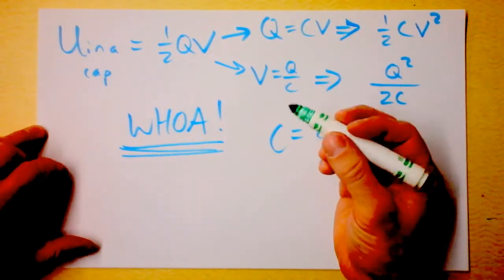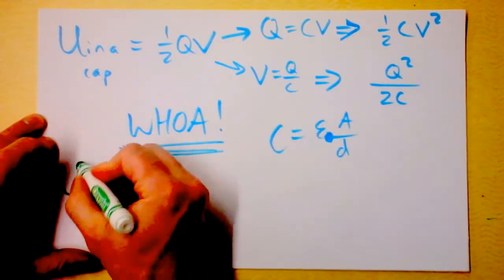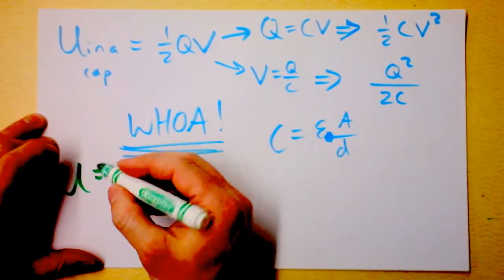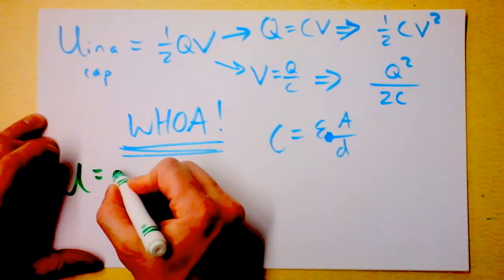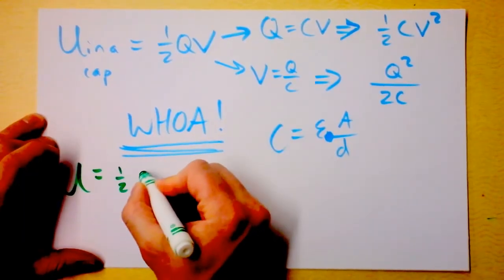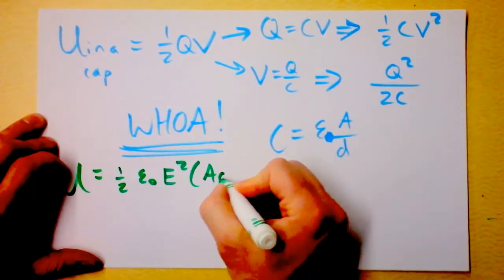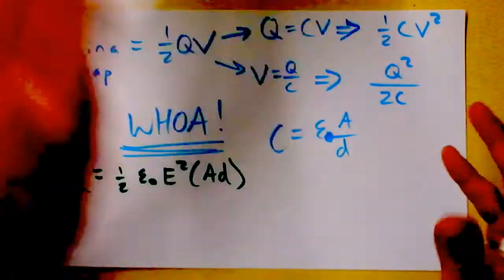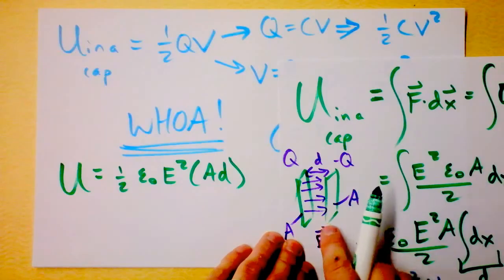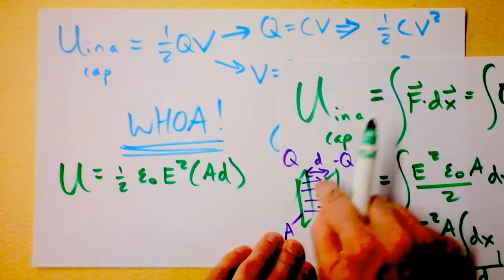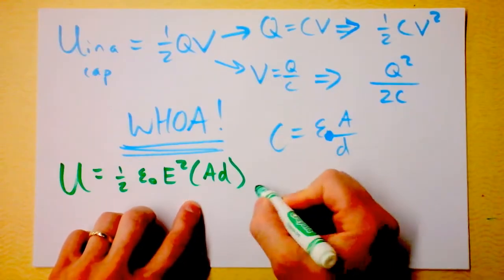Finally, I want to show you something beautiful and stunning. The energy stored in a capacitor is one-half epsilon-naught electric field squared times A times D. Guess what A times D is? This capacitor has a D here and an area right there. Area times D is volume.